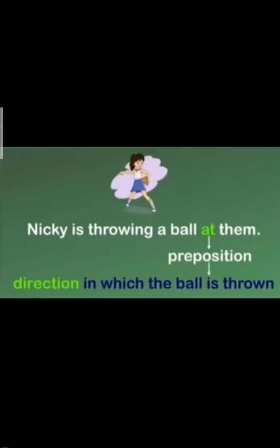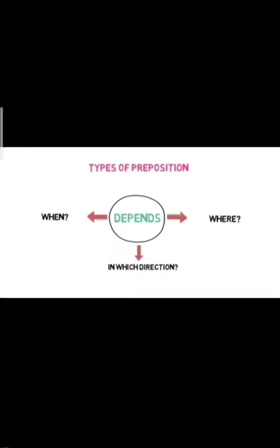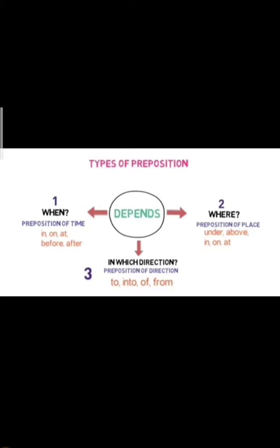For example: Nikki is throwing a ball at them. Nikki jo hai woh ball throw kar rahi hai — unpe. At them. At se yoh pata chal rahi hai ki woh kis pe fack rahi hai — unki taraf fack rahi hai. So 'at' is used as preposition of direction. For preposition of direction, in which direction something happens, we use: to, into, of, or, from.